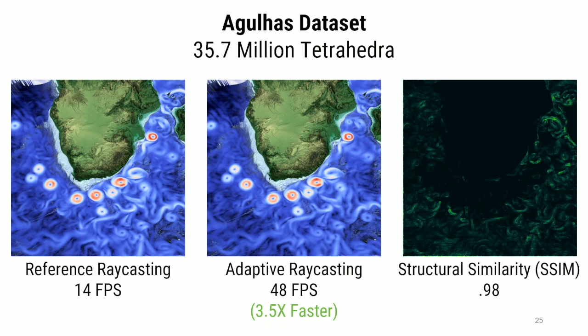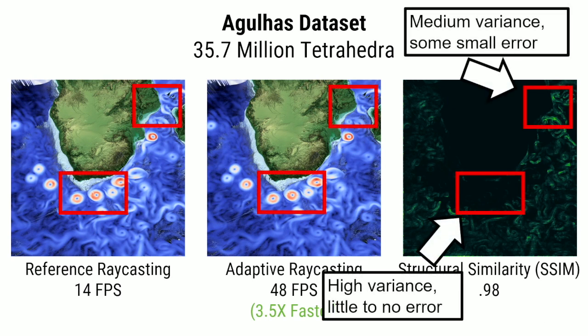We compare our baseline ray casting method with hardware-accelerated point queries on the left against our new adaptively sampled ray casting method in the center, and show a normalized structural similarity image on the right to visualize any error from adaptive sampling. On the Segulhas dataset we see roughly a 3.5x performance improvement from adaptive sampling and empty space skipping, while preserving details in the high-variance regions in the center of the volume. We do see some error in medium-variance areas, though the comparison image is normalized so we're being quite strict about any error.